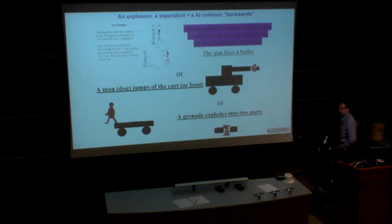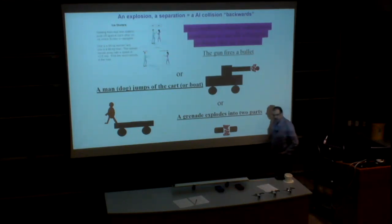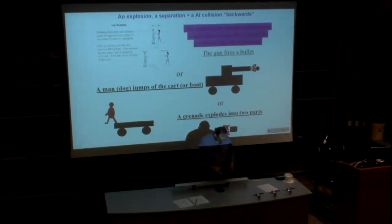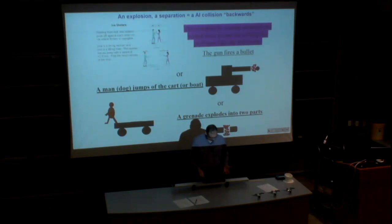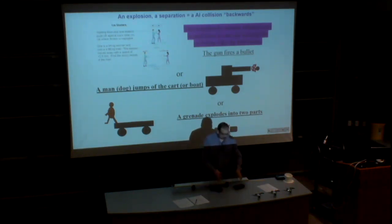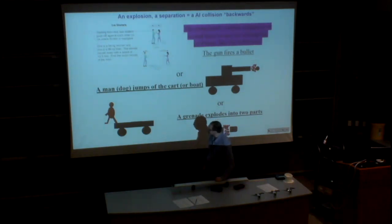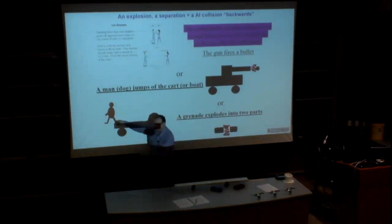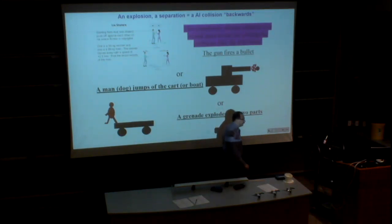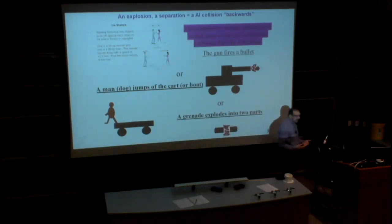There are many similar situations that can be solved with exactly the same type of reasoning but kind of backwards. We already said an explosion looks like this: you had a system, and it breaks into different parts traveling away from each other. The nature of those parts doesn't matter — it could be two persons pushing each other, someone jumping off a cart, an actual explosion, or a shot. All these situations are physically identical — basically a collision backwards.